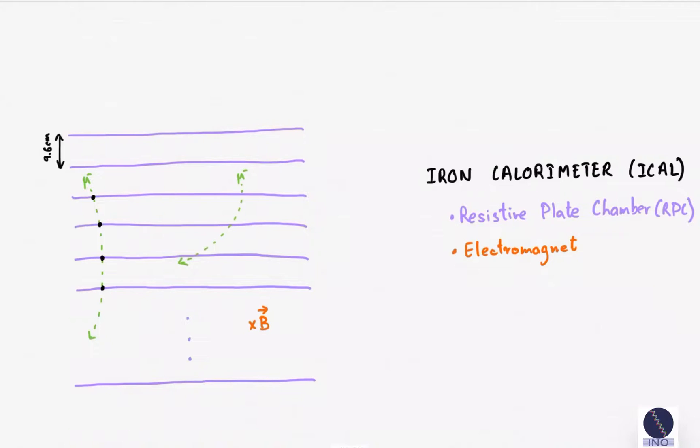Slower muons will curve more sharply than the faster muons. So, by looking at the curvature, we can measure the momentum of the muons.